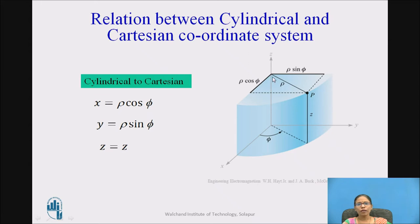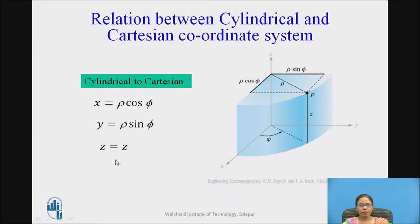Similarly, I can see the adjacent side here. The radius is rho and the angle is phi, so the adjacent side is rho-cos-phi. The same length, when projected downward, is nothing but the x-axis. So x is rho-cos-phi. And z remains the same — z in cylindrical and cartesian will remain the same. So: x is rho-cos-phi, y is rho-sine-phi, and z is z.